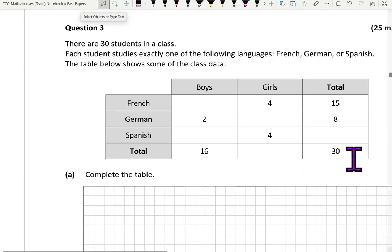Okay, welcome back students. In this question we're trying to organize the statistics for 30 students in a class using what's called a two-way table.